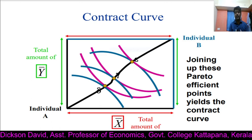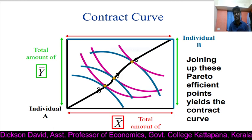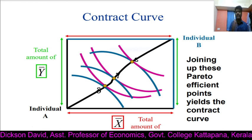Here in the diagram, there are three indifference curves for individual A and three indifference curves for individual B, and these indifference curves intersect each other. That means an indifference curve of individual B intersects with one indifference curve of individual A at one point, and another indifference curve of individual B intersects with another indifference curve of individual A likewise.